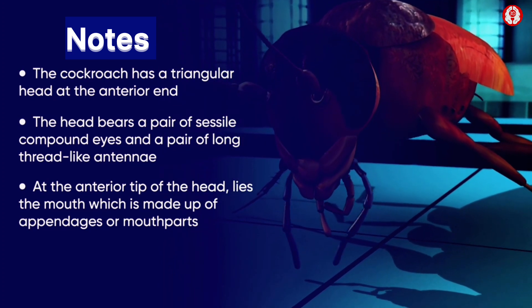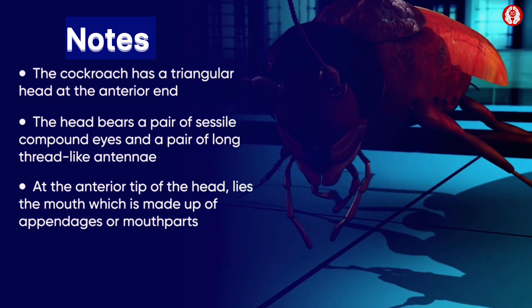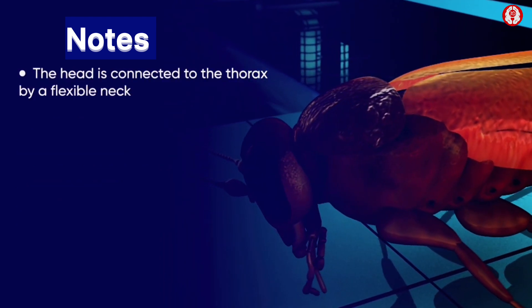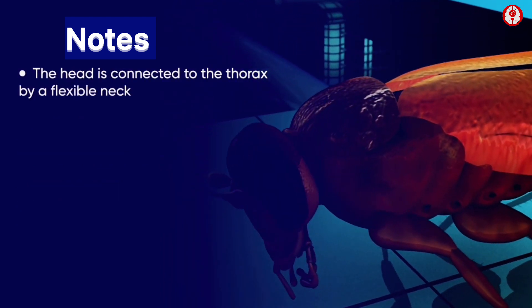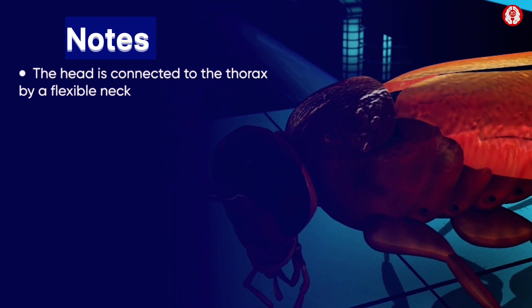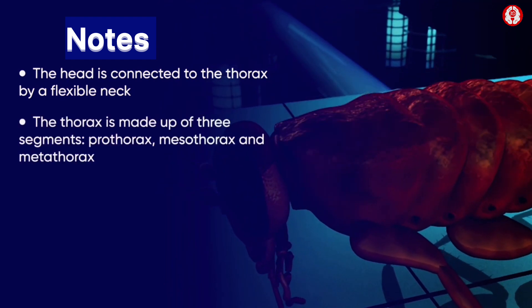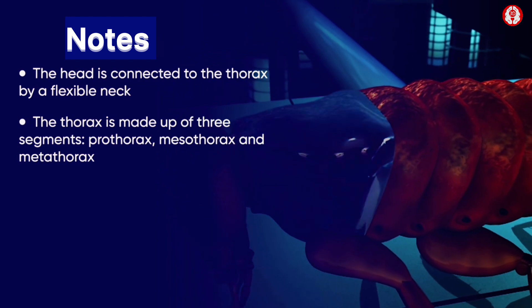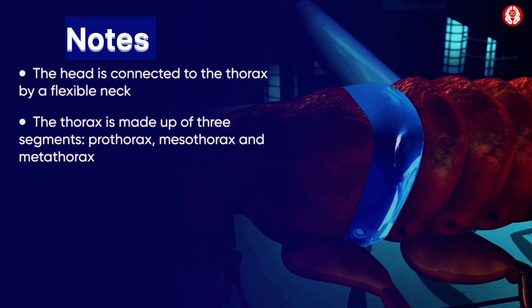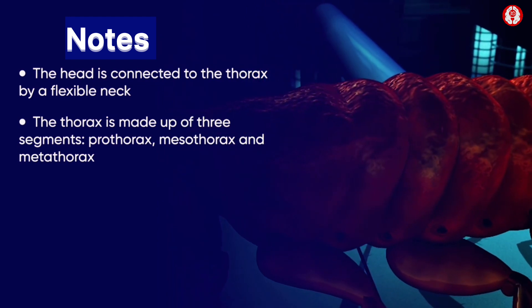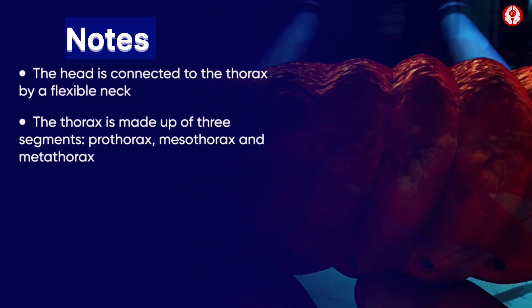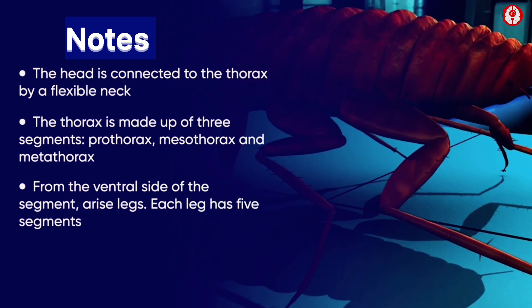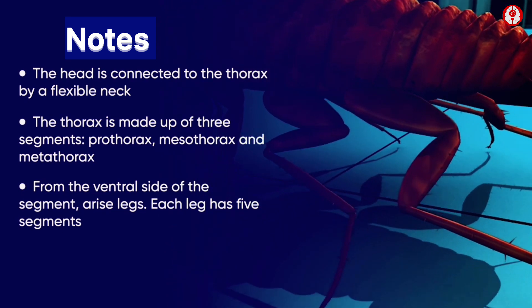The mouthparts also include a labium and a labrum. The head is connected to the thorax by a flexible neck. The thorax is made up of three segments: the prothorax, mesothorax, and metathorax. From the ventral side of each segment arise legs.